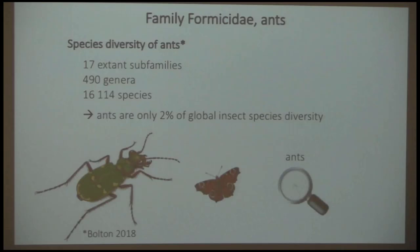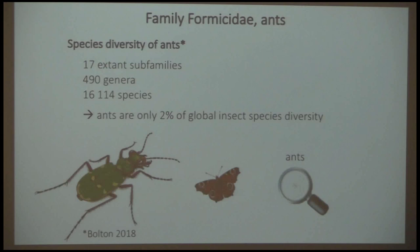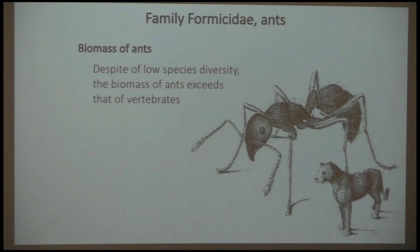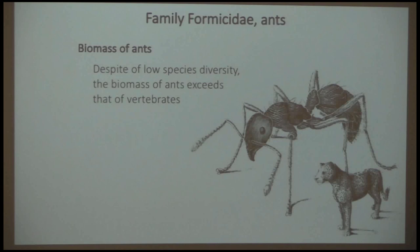Ants form just one family, the Formicidae. Currently the species diversity is 17 subfamilies, less than 500 genera, and a little over 16,000 species. So it's a small group — just two percent of global insect diversity. In comparison to the Coleopterans and Lepidopterans, ants are really a small group. But less is more: the biomass of ants is really great. Despite low species diversity, the biomass of ants exceeds that of vertebrates — possibly including humans.